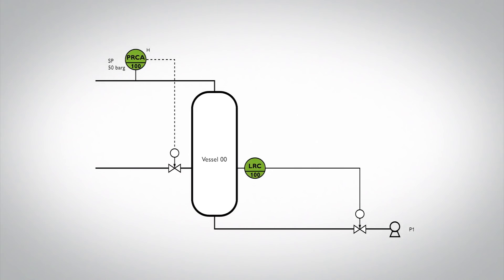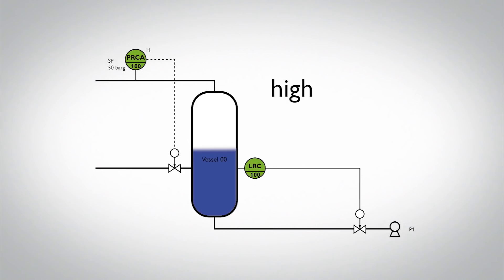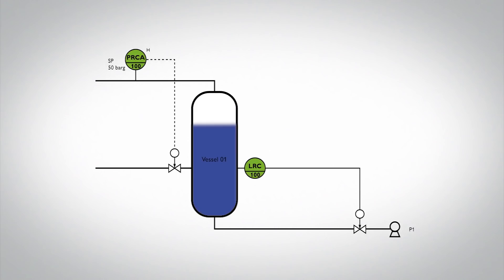To identify the possible hazards, you pick a parameter and use specific guide words on it. For example, we look at the parameter pressure of a vessel and use the guide word HIGH. This could mean a mechanical failure of the vessel when the pressure gets too high. In this way you go through every node of the entire process to identify every possible hazard.